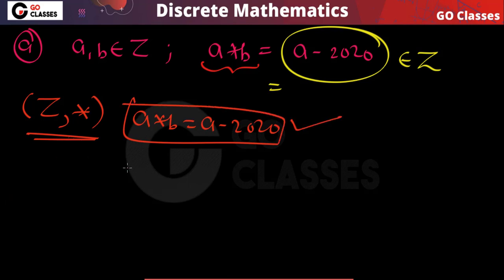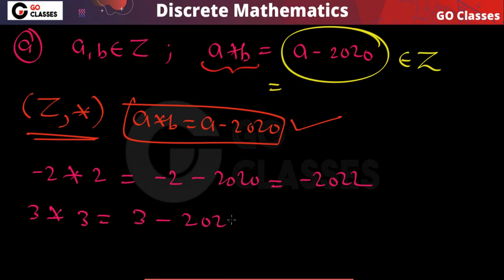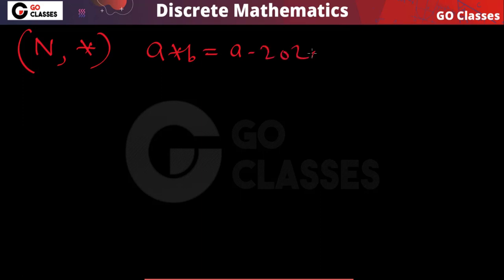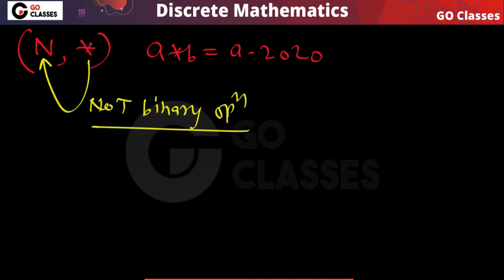For example, what is minus 2 star 2? That will be minus 2 minus 2020, so the answer is minus 2022. What is 3 star 3? That will be 3 minus 2020. However, this is not a binary operation on the set of natural numbers because the closure property is not satisfied — this operation is not closed on natural numbers.